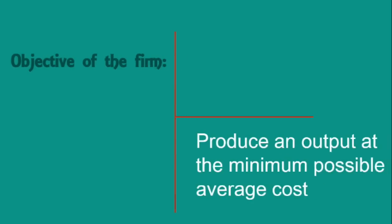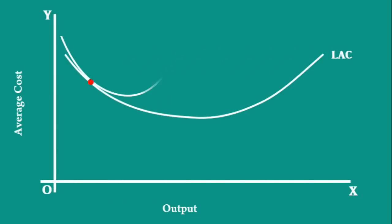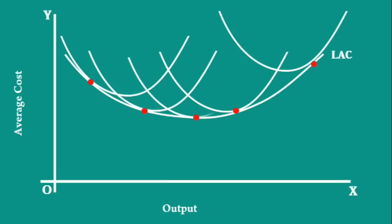One of the long run objectives of the firm is to produce an output at the minimum possible average cost. Each point on the long run average cost curve is tangent to a plant curve.